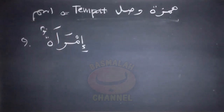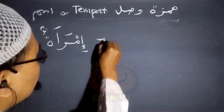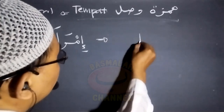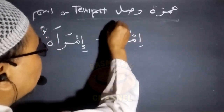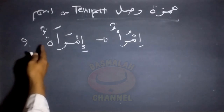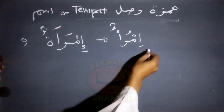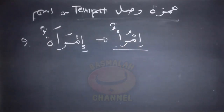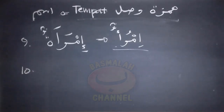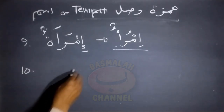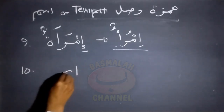Yang kesembilan adalah hamzah yang ada pada lafad 'imro'atun'. Imro'atun ini adalah bentuk muannas dari lafad imru'un yang tadi telah dibahas, jadi imro'atun mudzakkarnya adalah imru'un. Hamzah dari kedua lafad tersebut sama-sama berupa hamzah wasol. Yang kesepuluh adalah terdapat pada lafad 'aimunun'.